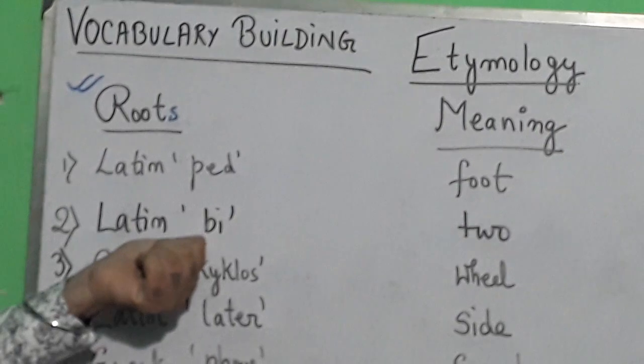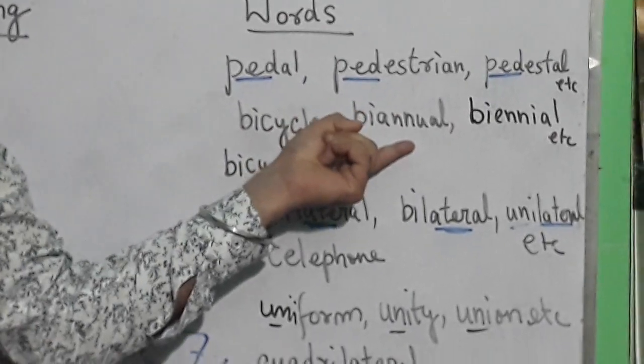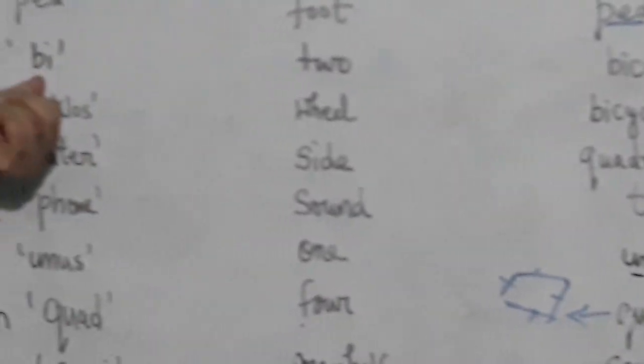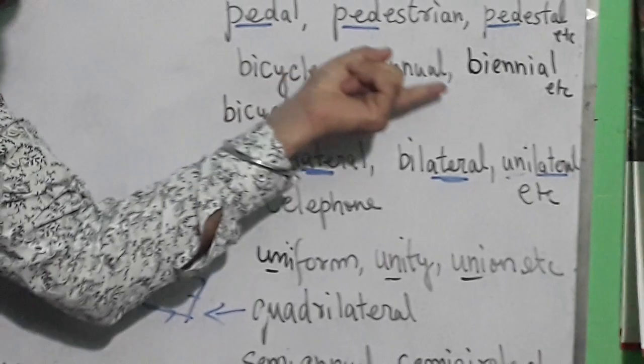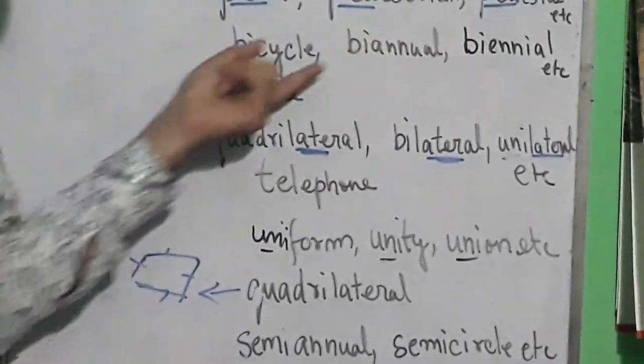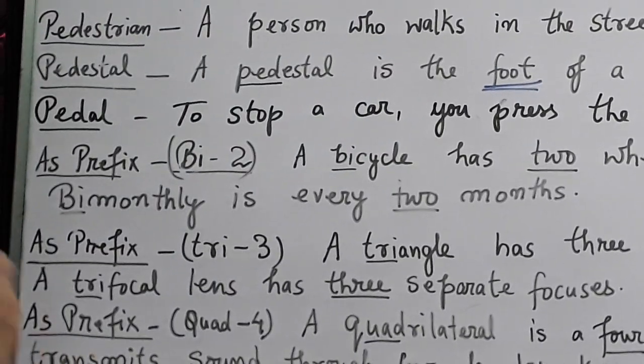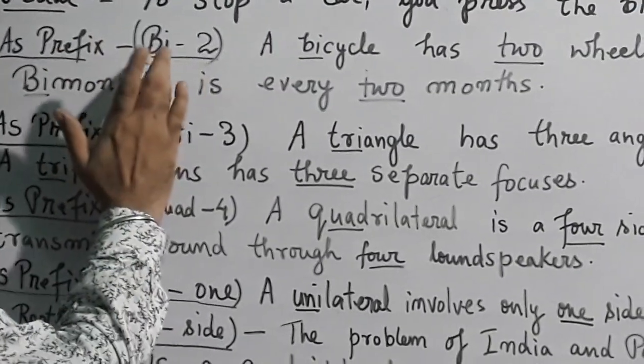Again I'm coming to the next etymology root. Latin 'bi', which means two, and the words that come from it are bicycle, biannual, and biennial. These are the words which come from 'bi'. Now we'll try to understand how 'bi' is used - bicycle, biennial - how they are used in sentences.